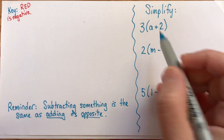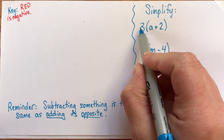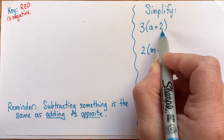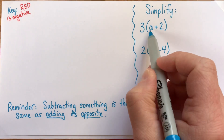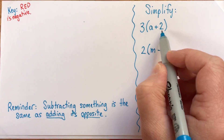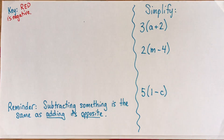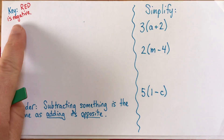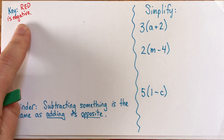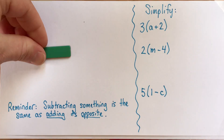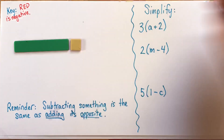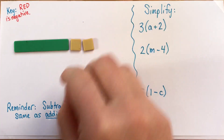In this case, it tells us that it's 3 times this whole thing, a plus 2. So even though the 3 is next to the a, it's the whole a plus 2 that's being multiplied by 3. To figure out what's going on here, we can get ourselves a little picture with some algebra tiles. With the tiles I'm using, red is negative and the other colors are positive. So we've got a and 2 positives — this is a plus 2.